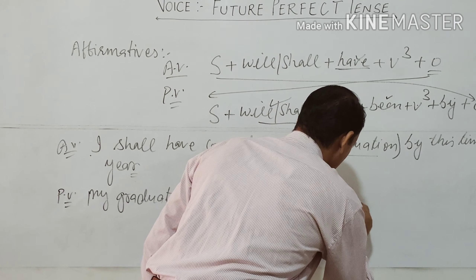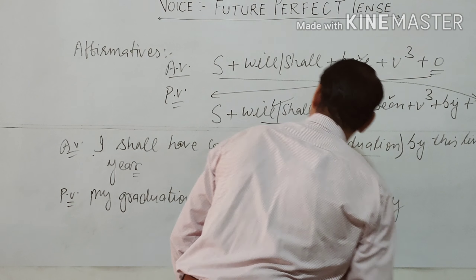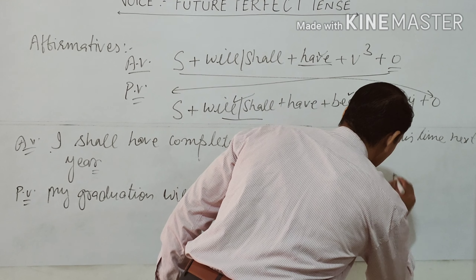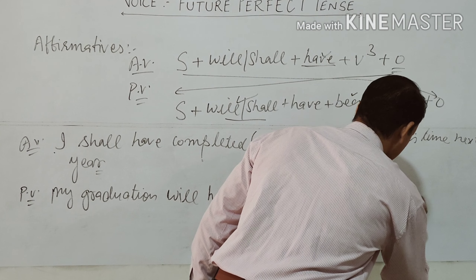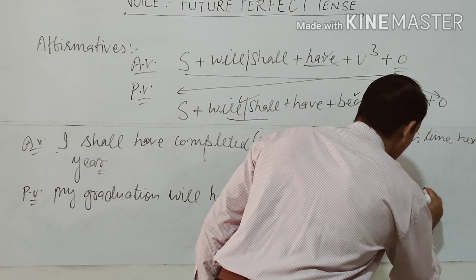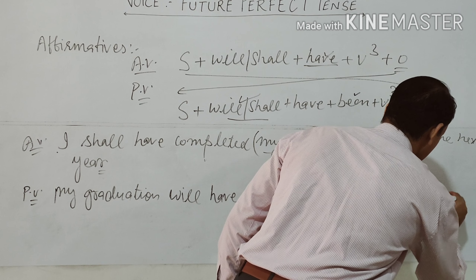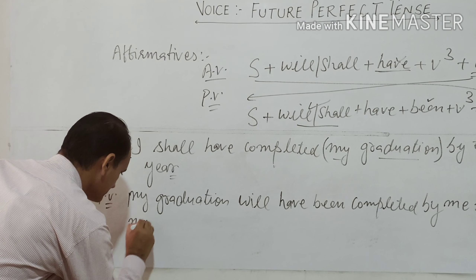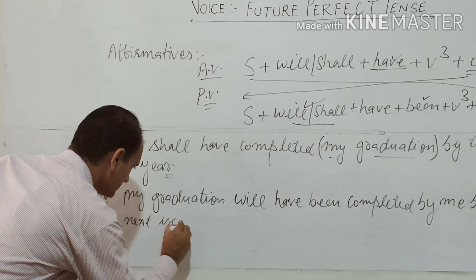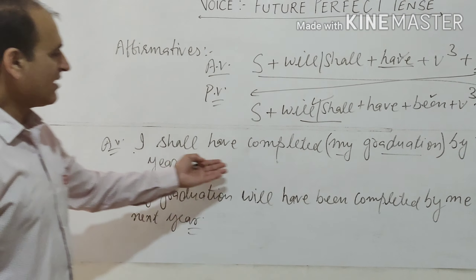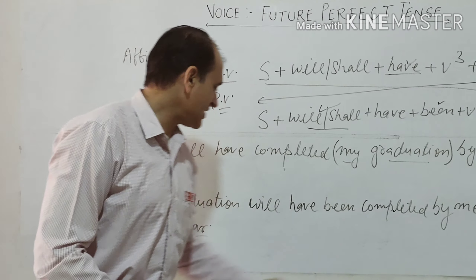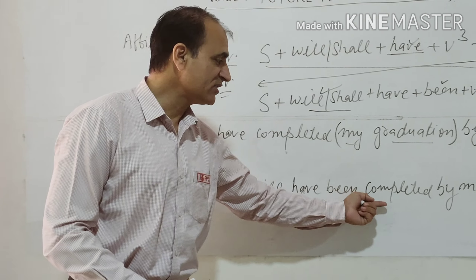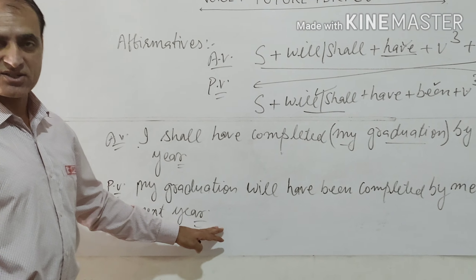...will have been — with the third form of the verb completed — followed by by. When we take I into the place of object, it changes its form and becomes me. Then we add the remaining adverbial phrase: by this time next year. So the full passive sentence is: My graduation will have been completed by me by this time next year.